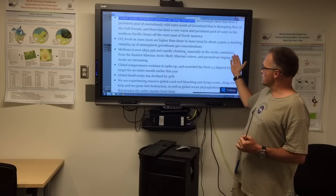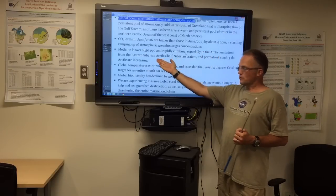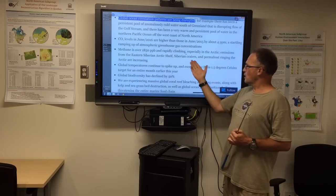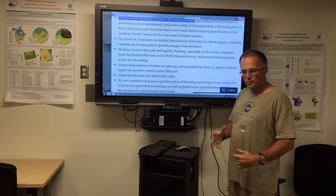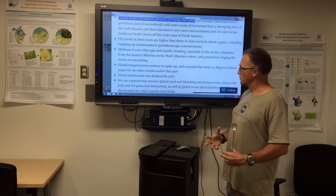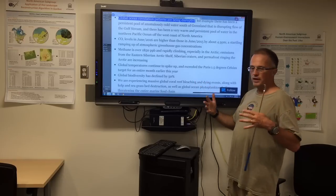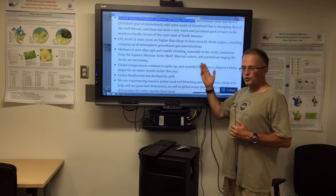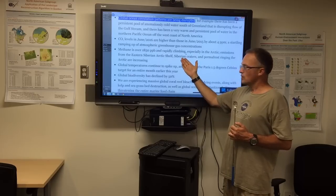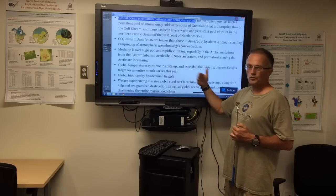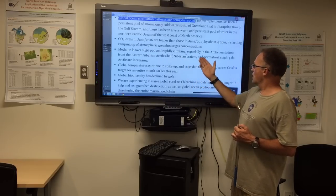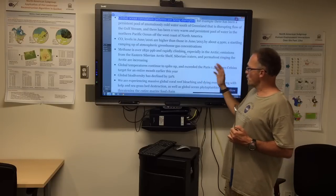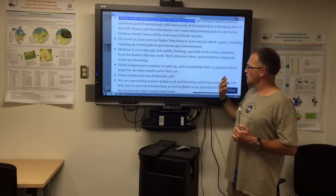Methane is over 1850 parts per billion and rapidly climbing, especially in the Arctic. We're seeing emissions from the Eastern Siberian Arctic shelf, the Russians are measuring large increases. We've seen Siberian craters. So methane clathrates have been building up the pressure under the ground, ejecting a lot of soil, creating a large crater, we measure high concentrations of methane. We're seeing this, we haven't seen this in Alaska yet. But we're seeing lots of these appear, especially on the Yamal Peninsula, where it's extremely warm. Also, permafrost ringing the Arctic is increased.